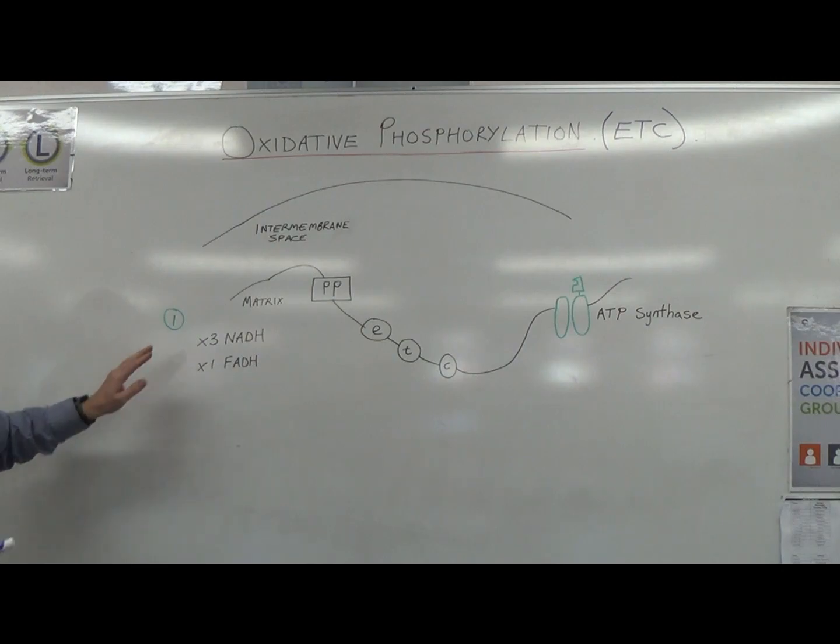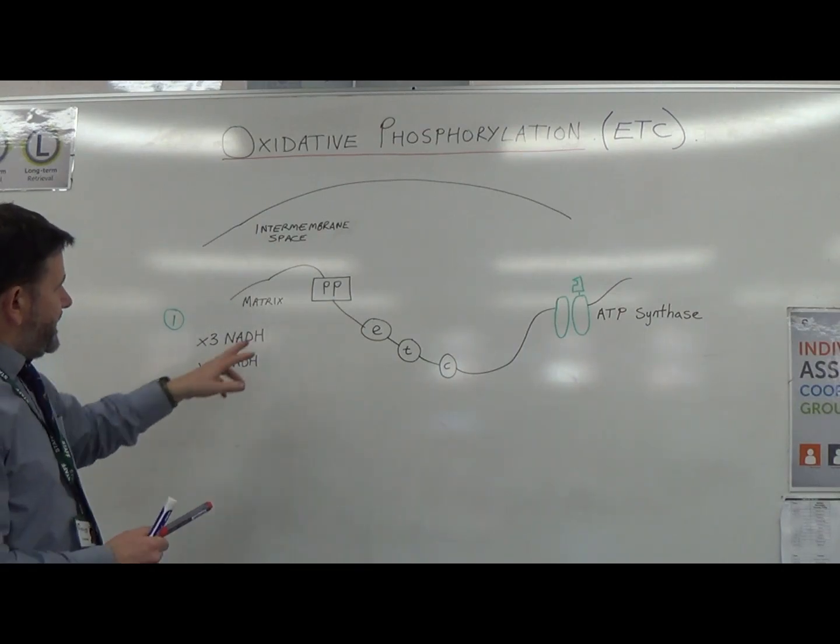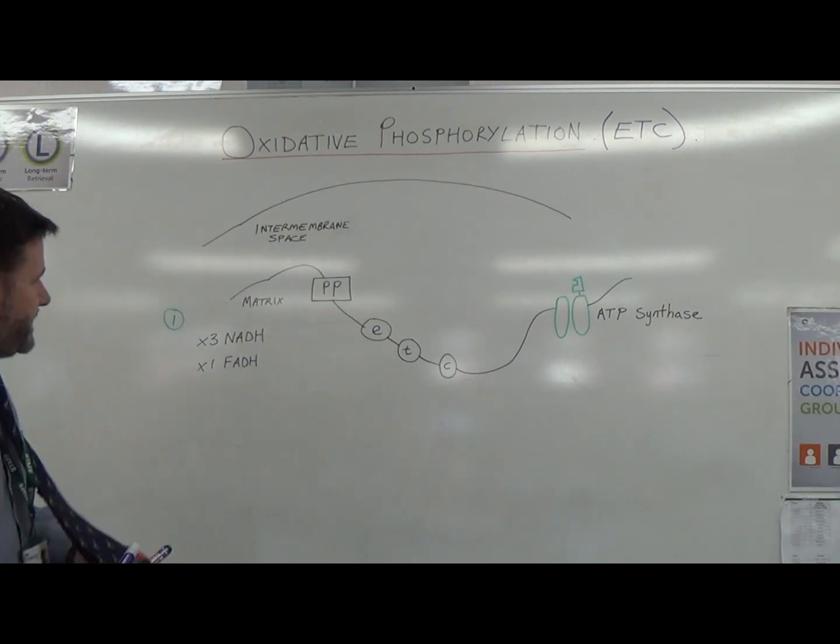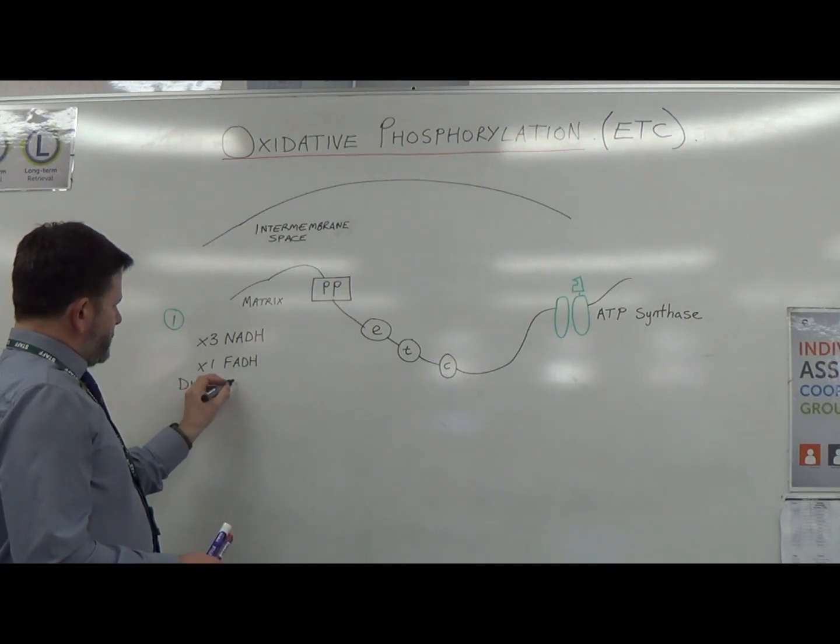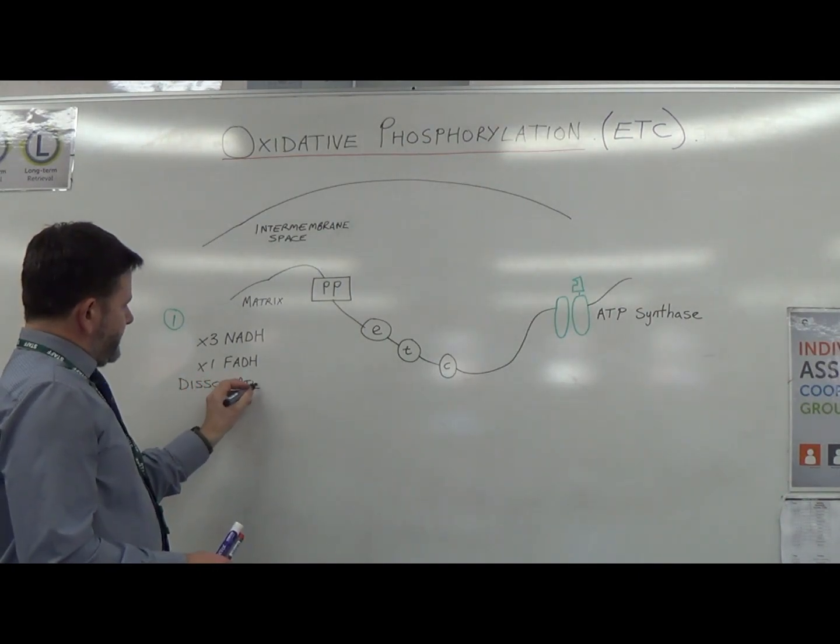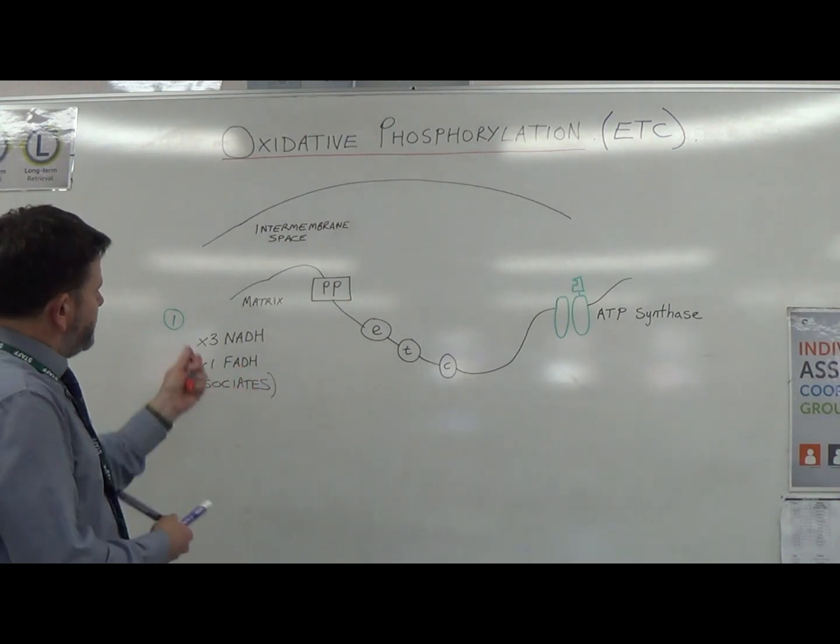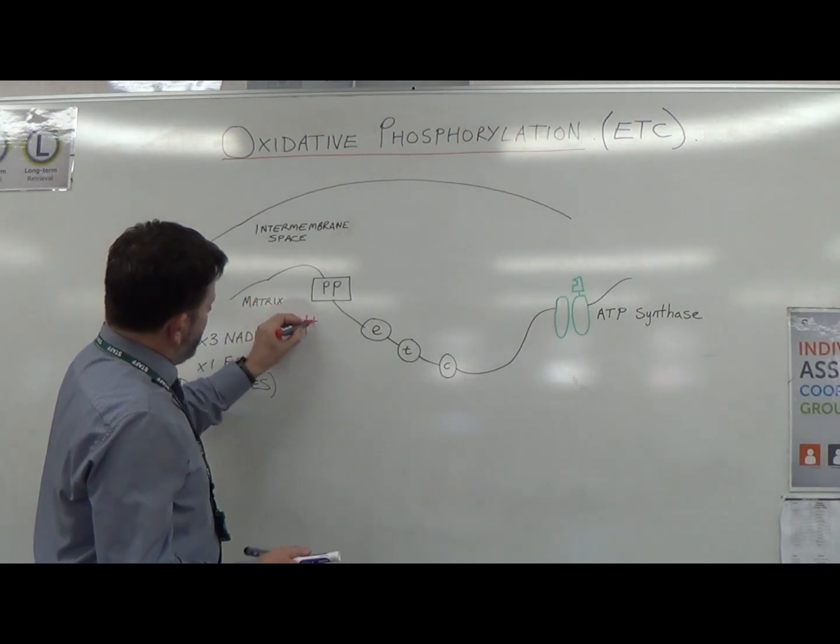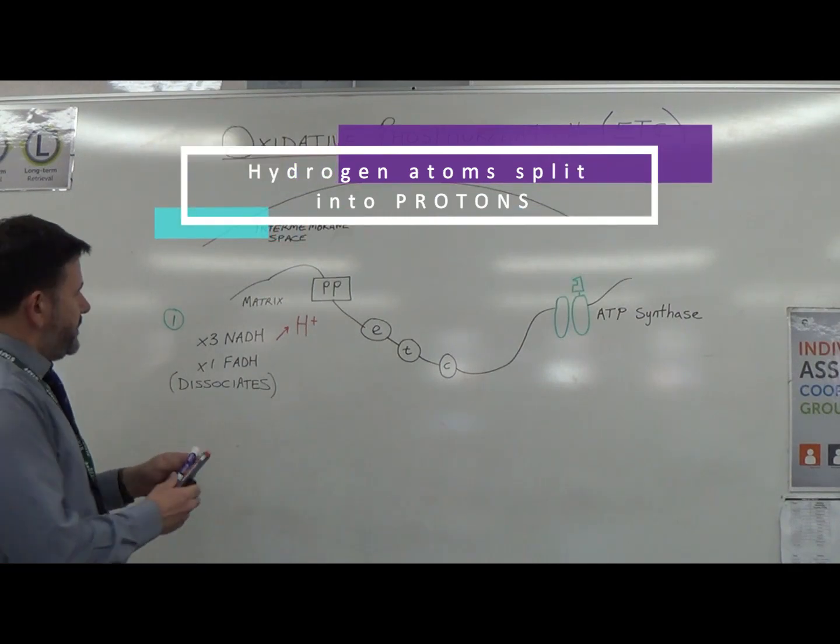Number one: the reduced NAD and FAD. What happens is that the hydrogen and the electrons dissociate. So we need to write down that they dissociate. I'll do hydrogen in red, so here's the hydrogen, and produced from that are electrons.